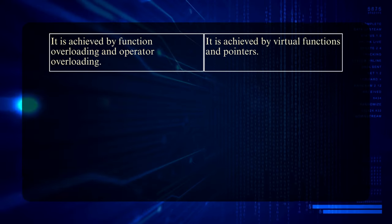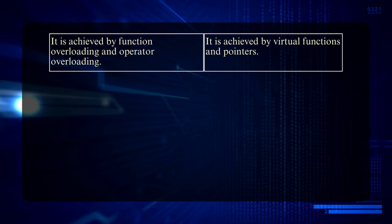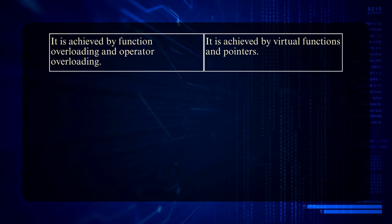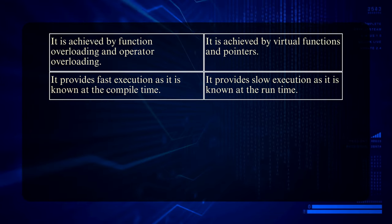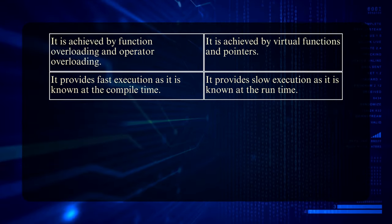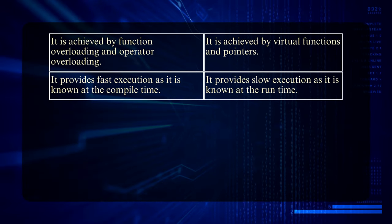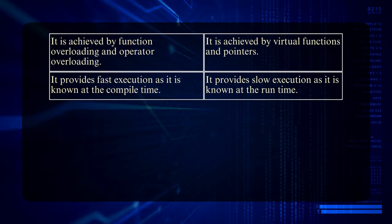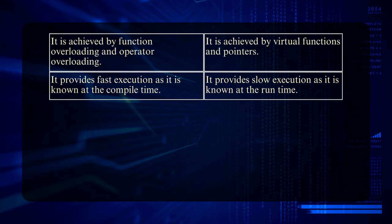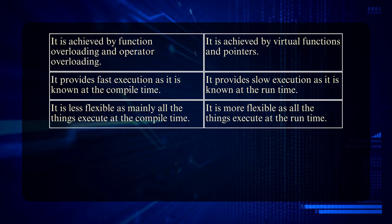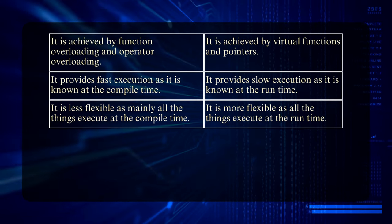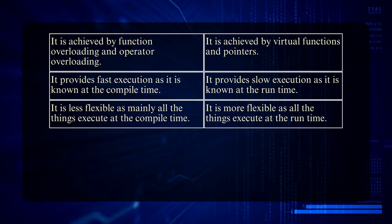Compile time polymorphism is achieved by function overloading and operator overloading. Runtime polymorphism is achieved by virtual functions and pointers. Compile time polymorphism has fast execution because the compiler resolves it early. Runtime polymorphism has slow execution. Compile time polymorphism is less flexible, whereas runtime polymorphism is more flexible.